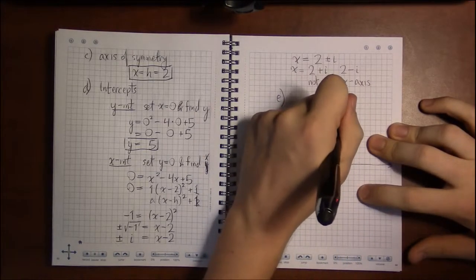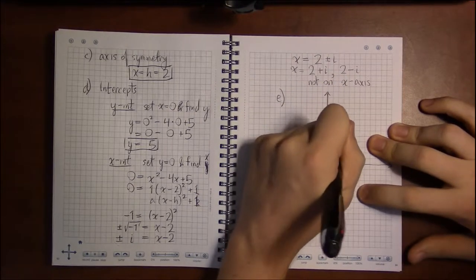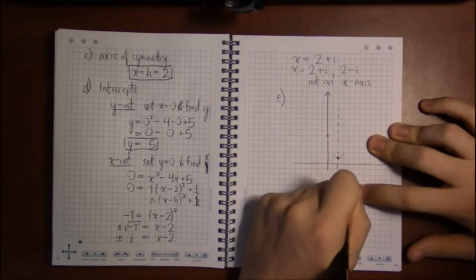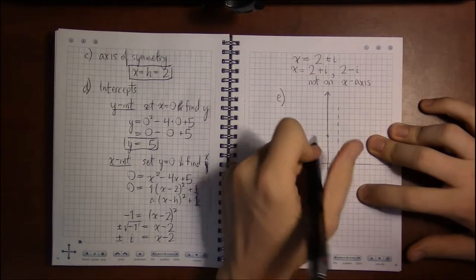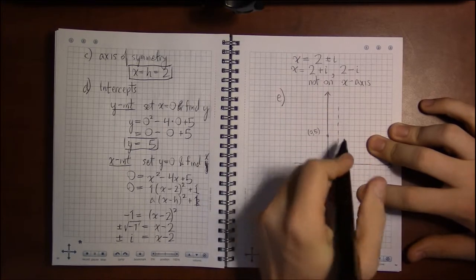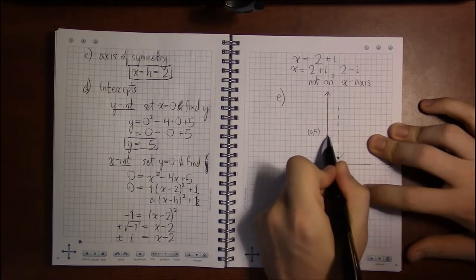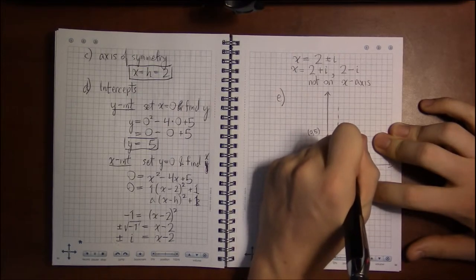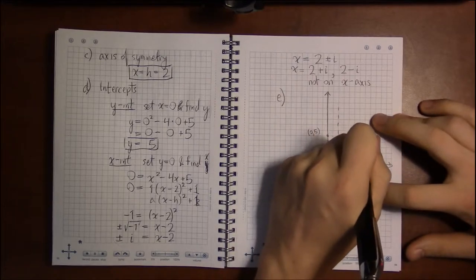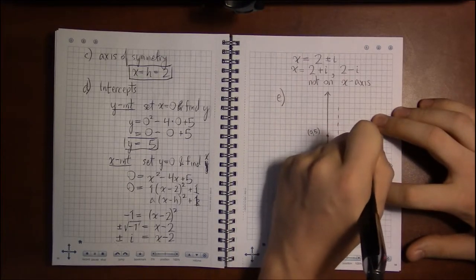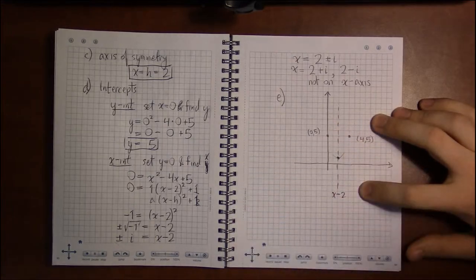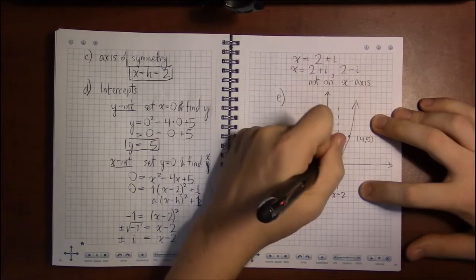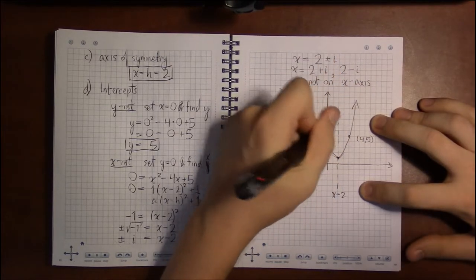Now let's see, we saw 2, 3, 4, 5. And by symmetry, because x equals 2 is the axis of symmetry, this point 0, 5 is 2 to the left of the axis, so if we go 2 to the right at that same height, we should have another point on the parabola, which just helps us get a bit more accurate graph.